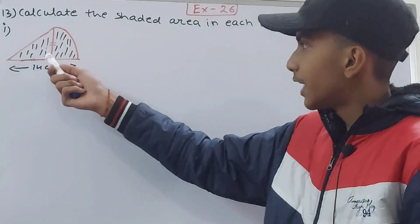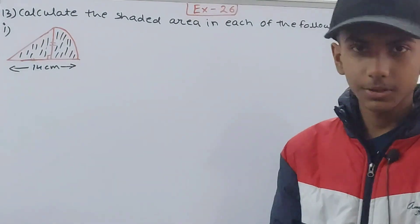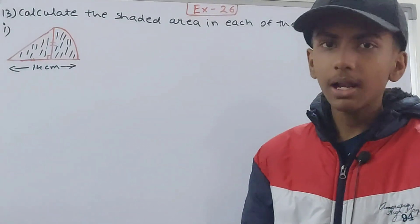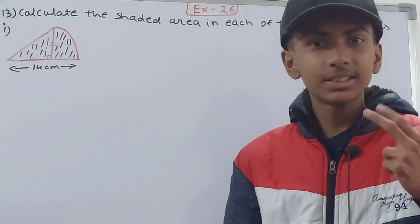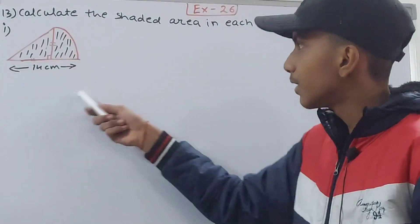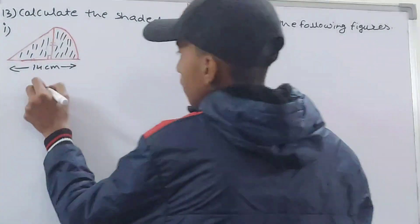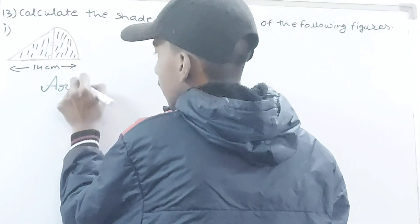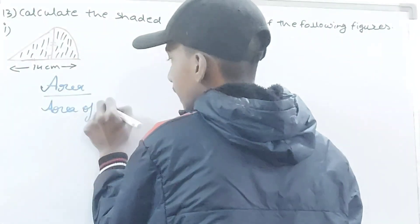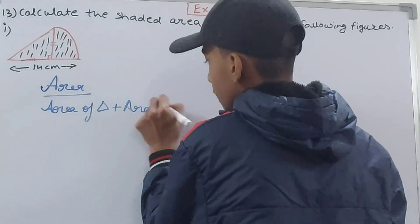A quadrant is one fourth part of a circle. So you can see we have these two combined. I will calculate the area separately and then combine, because there is no direct formula for calculating the area of such figures. So the area will be: area of triangle plus area of quadrant.